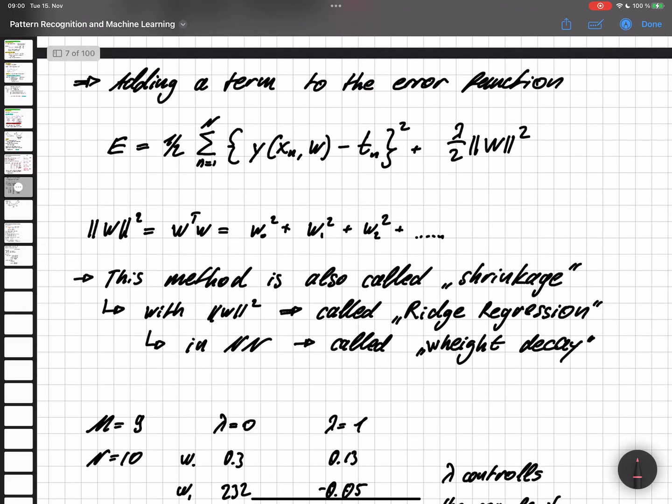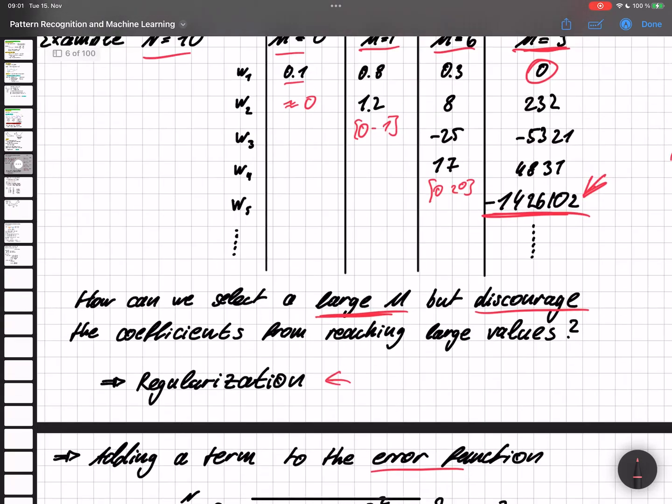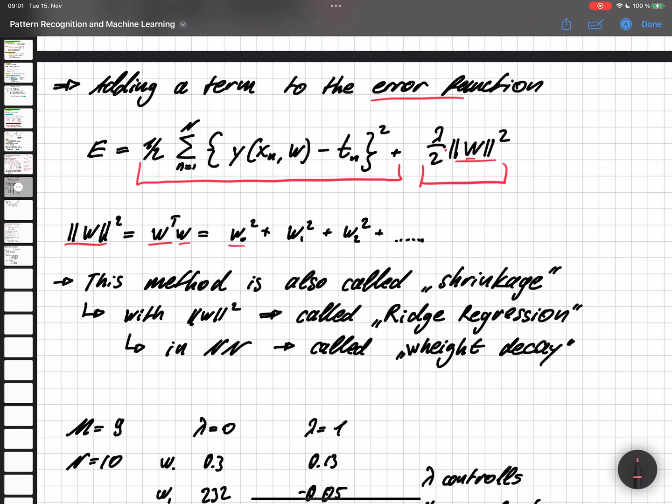We do that by just simply adding a term to the error function. This was the part that we had the last time. And now we add lambda divided by 2 times the length of our vector with the w's. So w to the power of 2 is basically w transpose w. So we have w0 squared plus w1 squared plus w2 squared and so on till the last one is wm squared.